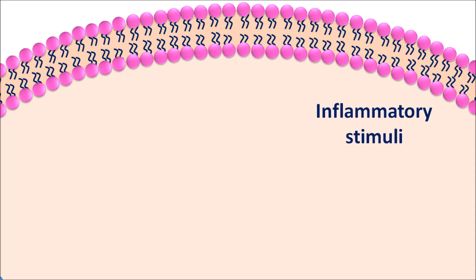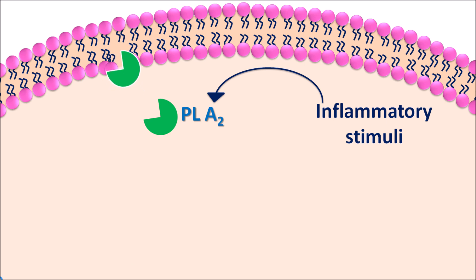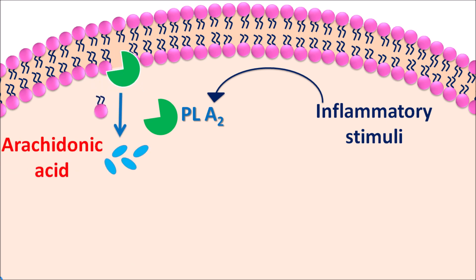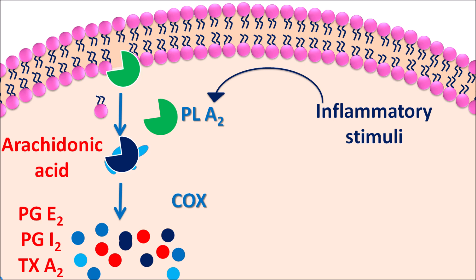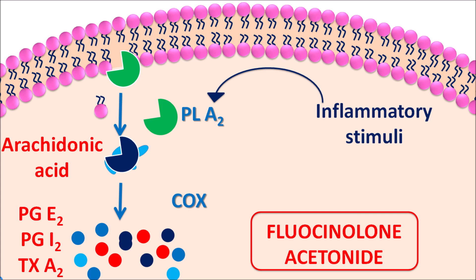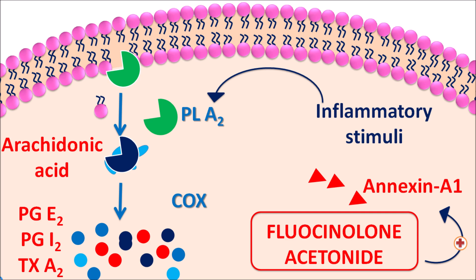Whenever there is inflammation, the inflammatory stimuli can stimulate the enzyme Phospholipase A2. This Phospholipase A2 is a cleavage enzyme which can cleave the phospholipids, converting them into arachidonic acid. This arachidonic acid is a C20 fatty acid which is then acted upon by the COX enzyme, converting it into various mediators such as PGE2, PGI2, and thromboxane A2 — prostaglandins and thromboxanes which increase inflammation, swelling, and vasodilatation. Fluocinolone acetonide acts as an anti-inflammatory agent by inducing Annexin A1, which blocks the activity of Phospholipase A2, thereby reducing the release of prostaglandins. This drug can also directly inhibit COX enzyme activity, thereby reducing the synthesis of prostaglandins. By all of these actions, fluocinolone acetonide acts as an anti-inflammatory agent.